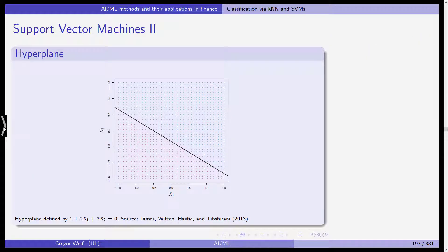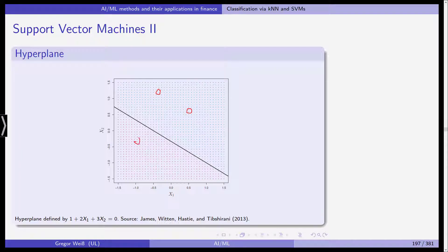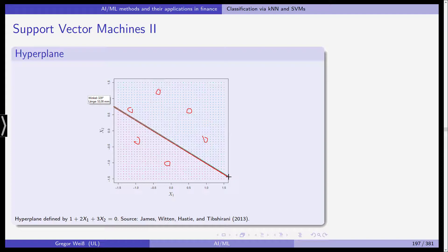You can now see why we're using hyperplanes here at the very start. In the two-dimensional case, such a line cuts through the plane and divides it into two halves. So if we have some observations and certain features associated with these points, this red line could be a decision boundary. All observations that fall into the blue space on top are classified as blue points, and those that fall below this line are classified into the red class. So the hyperplane is used for classification.